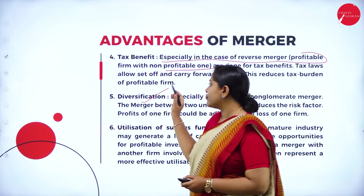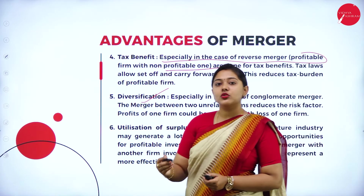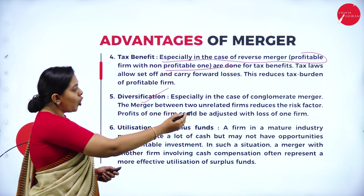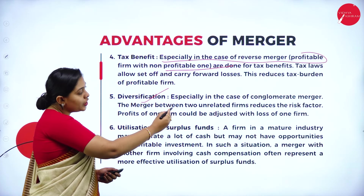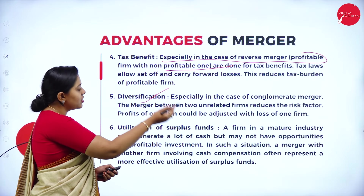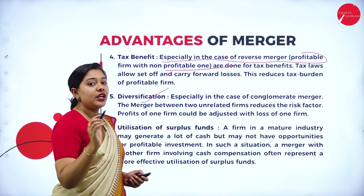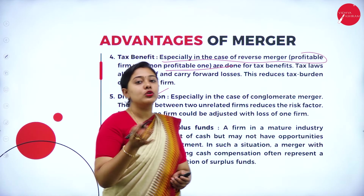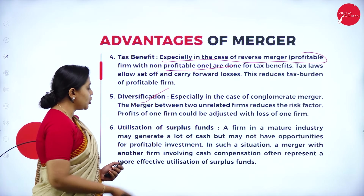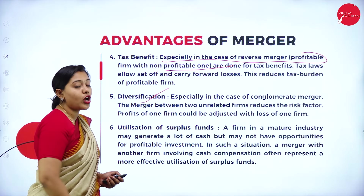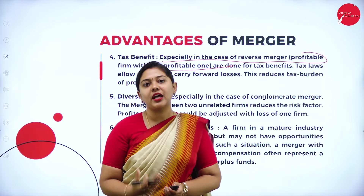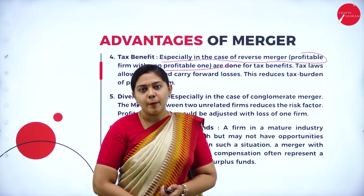The fifth advantage is diversification — especially in the case of conglomerate merger, where the merger between two unrelated firms happens. The profit of one firm can be adjusted against the loss of the other firm, so there is risk diversification. Another advantage is utilization of surplus funds — optimum resources can be used with the help of merger.